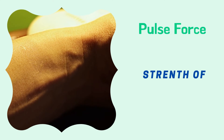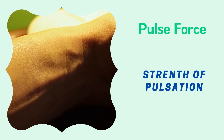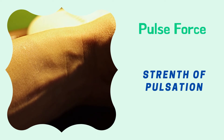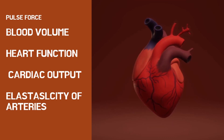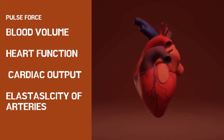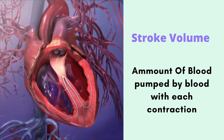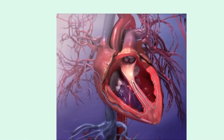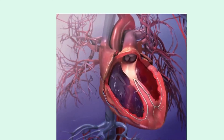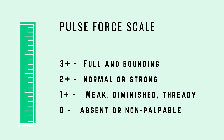When palpating the pulse, pulse force is the strength of the pulsation — is it soft, so light you can scarcely feel it, or quite strong and rushing into your fingertips? The force is vital to measure because it represents blood volume, heart function and cardiac output, and the elasticity of the arteries. Stroke volume refers to the amount of blood pumped by the heart with each contraction. Pulse force indicates how hard the heart must work to push blood into the circulatory system. A 4-point scale measures pulse force: 3+ full and bounding; 2+ normal or strong; 1+ weak, diminished, or thready; and 0 absent or non-palpable. Also known as compressibility of the pulse, it is a rough measure of systolic blood pressure.